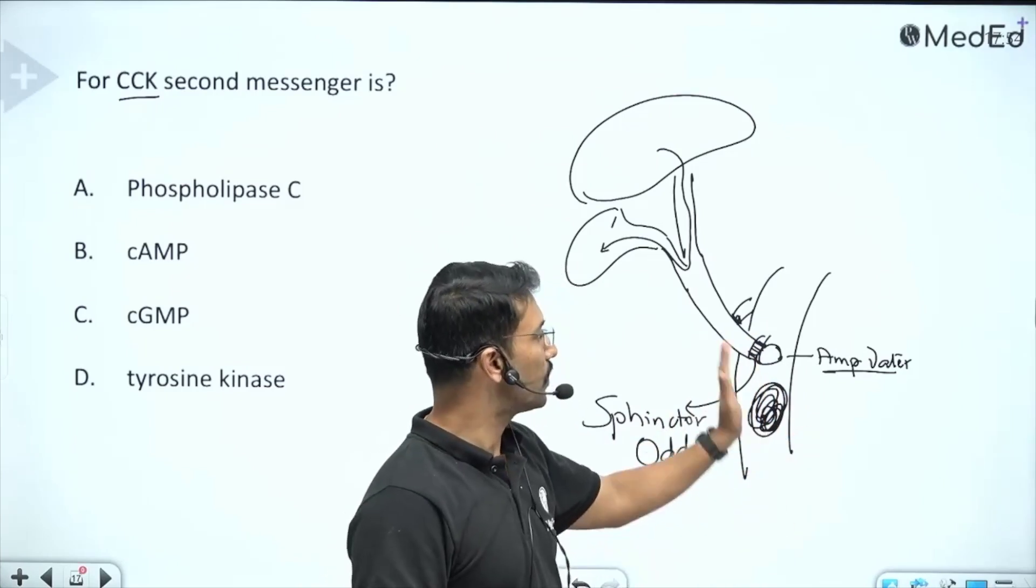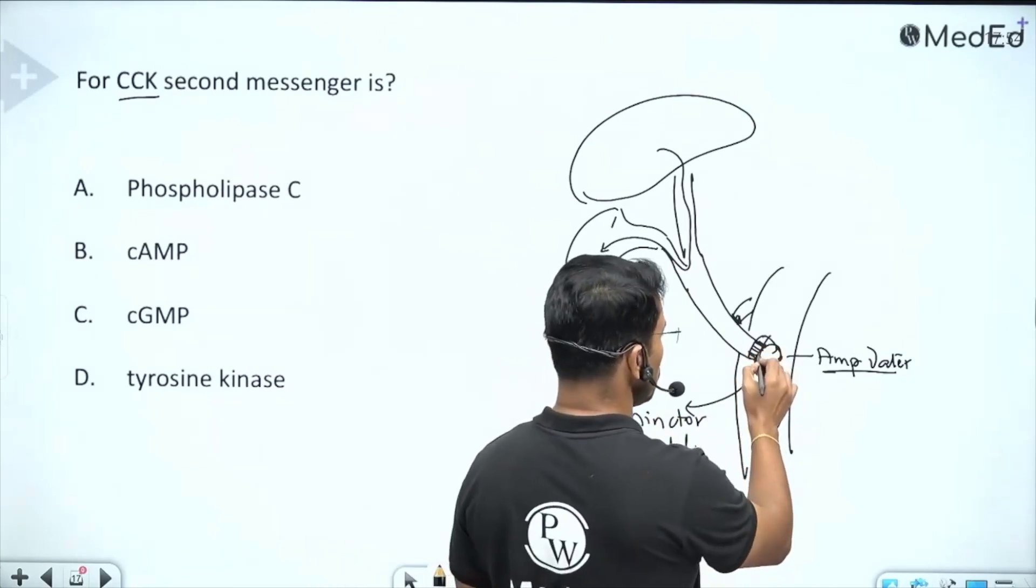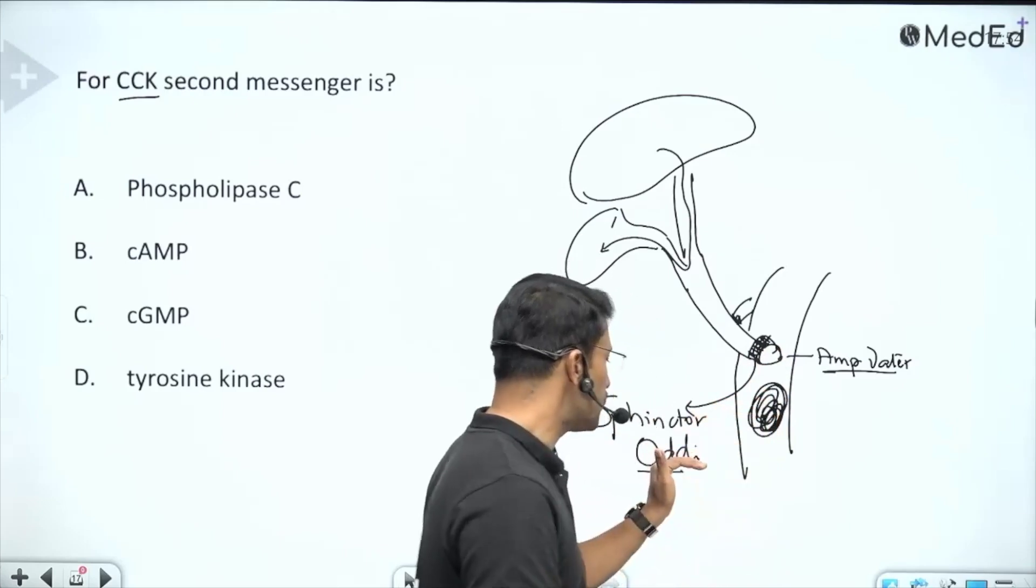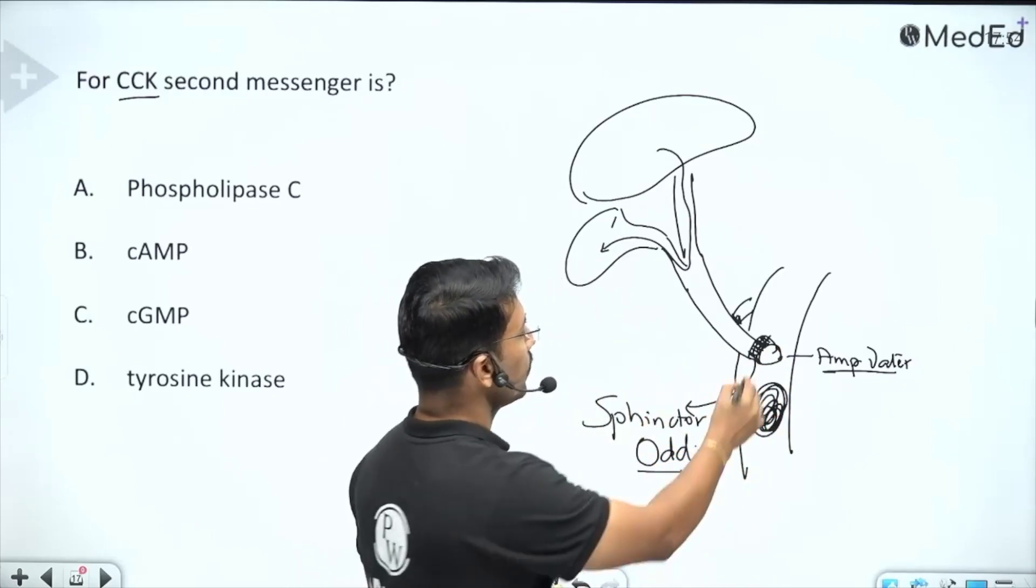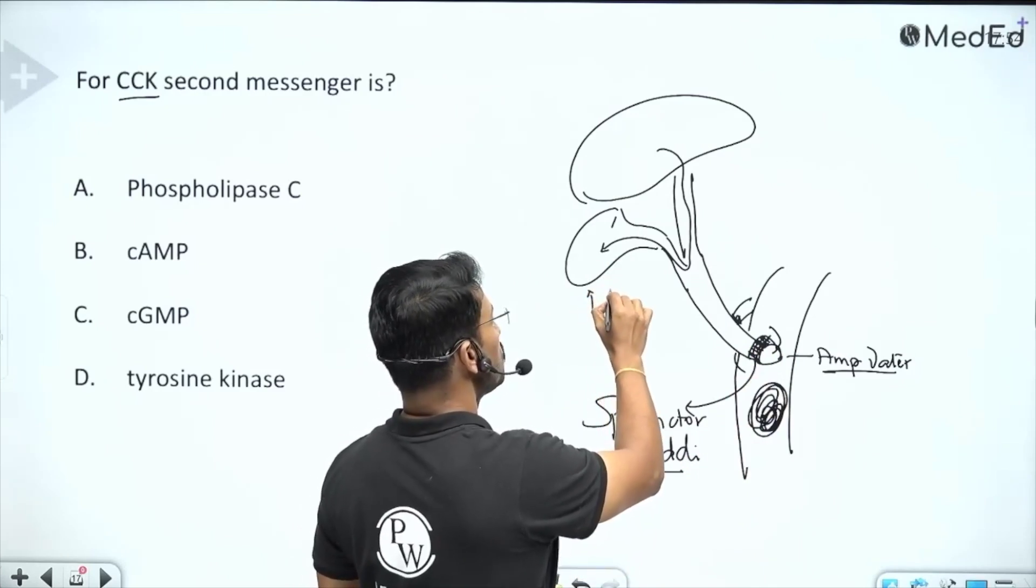That is why whenever food reaches the duodenum, bile should also come. Otherwise, the bile release is constantly under check by the constant tone of the sphincter of Oddi. What we need to do is relax the sphincter of Oddi and cause contraction of the gallbladder.